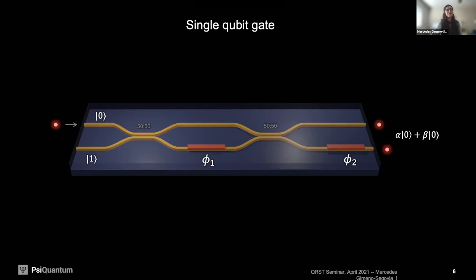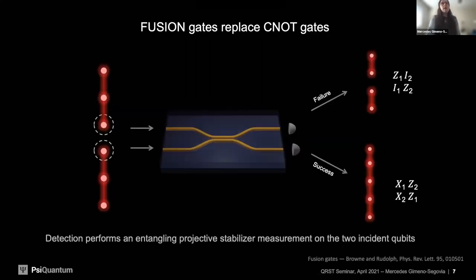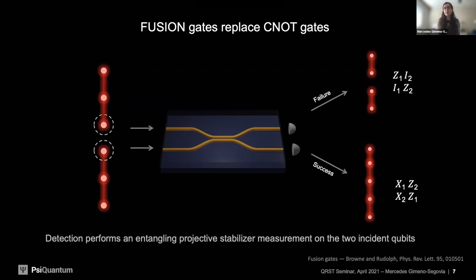Two qubit gates are slightly different. CNOT gates can be implemented in linear optics — Jeremy O'Brien's group showed the first CNOT gate with silicon photonics. However, they're not the most natural two-qubit gate for photons. The more natural gates are what we call fusions. They're more natural because they consist of a passive interferometer, and the simplest one — type one fusion — is literally just one beam splitter and two detectors.